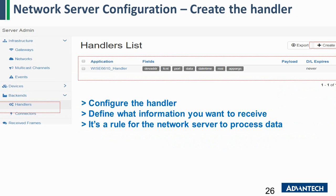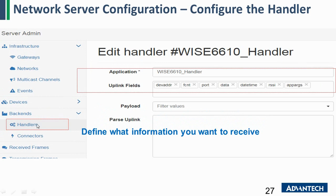The next part is the handler. The handler defines the information you want to receive — it is the rule for the network server to process the data. When the network server receives raw data, there are many items in it, but only selected fields will remain after processing. You can go to the handler and decide what fields you want to keep for each sensor node's data.